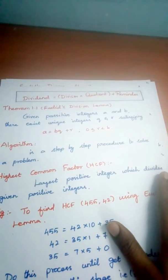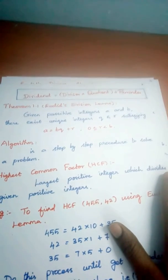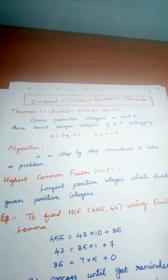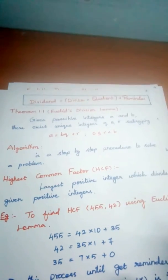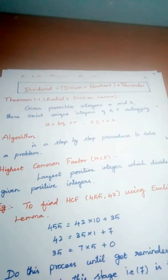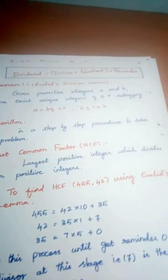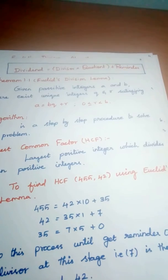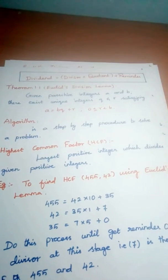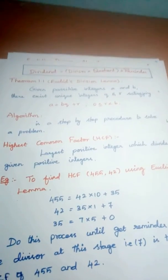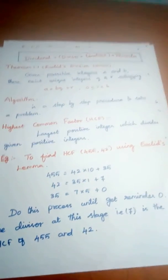An algorithm is a step-by-step procedure to solve a problem — there are written steps to understand the process or procedure. The highest common factor, HCF: the largest positive integer which divides the given positive integers is called the HCF of those integers.